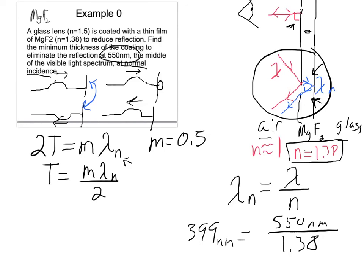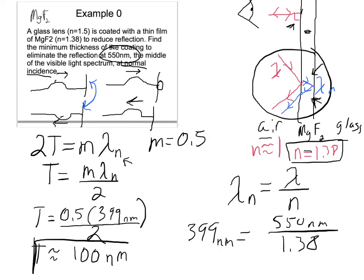Now I'm ready to actually solve the problem. So the thickness of the film is equal to 0.5 times 399 nanometers, my new lambda, divided by 2. And when I do that, I get, and I'm going to round this off again, I get T is about 100 nanometers. So that thin film on top of the glass is 100 nanometers.